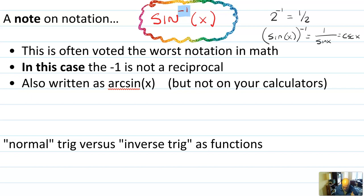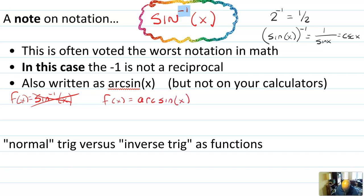One way people get around this is by writing arcsine of x instead of sine inverse. I actually like this notation — that's what I prefer to use. The problem is your calculator doesn't have space for arcsine, so it uses sine inverse. So as long as we're still using calculators, we can't get rid of that notation entirely. But when you're doing things by hand, you can definitely use arcsine notation.